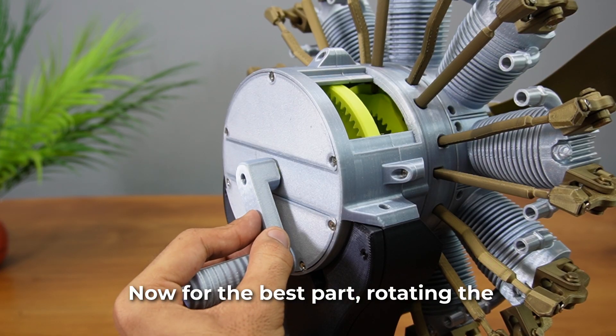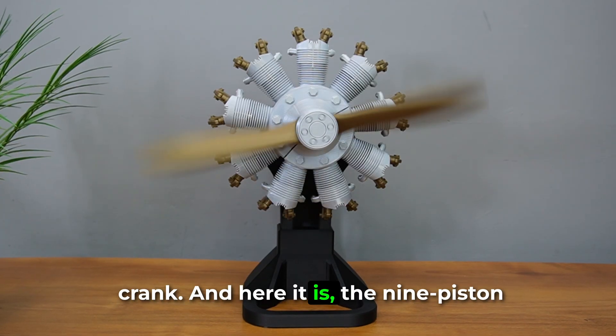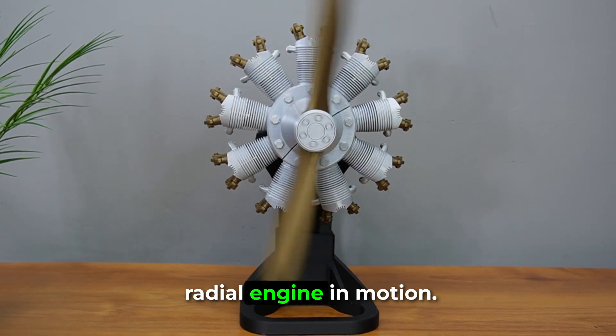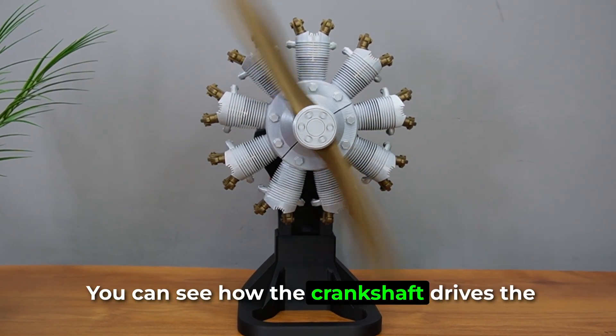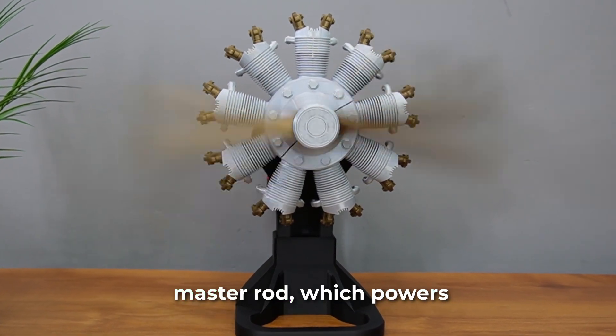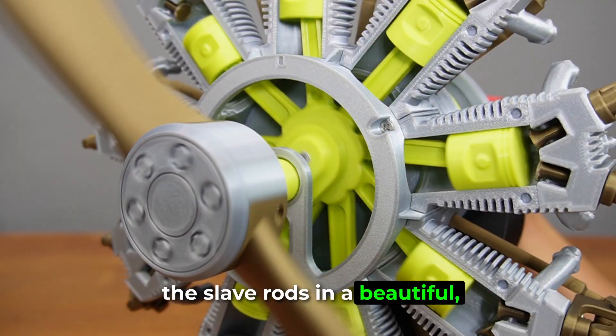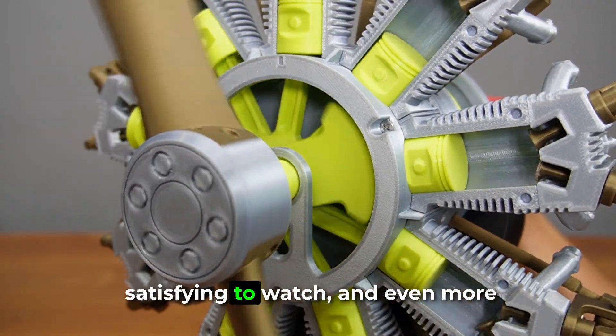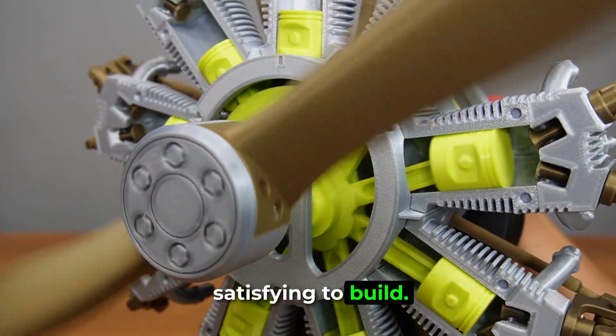Now for the best part, rotating the crank. And here it is, the nine-piston radial engine in motion. You can see how the crankshaft drives the master rod, which powers the slave rods in a beautiful synchronized pattern. It's incredibly satisfying to watch, and even more satisfying to build.